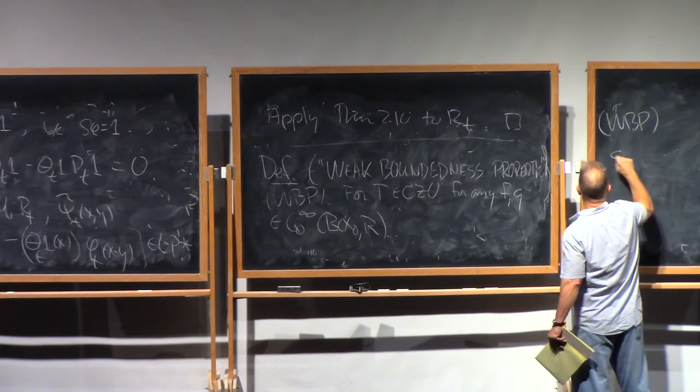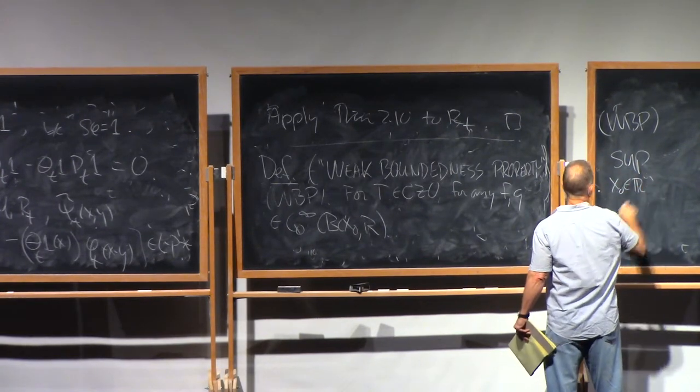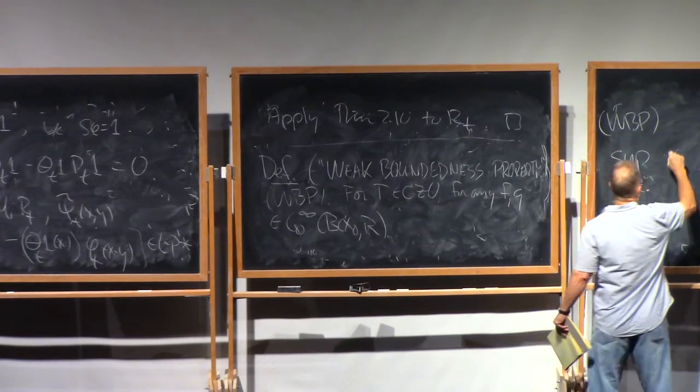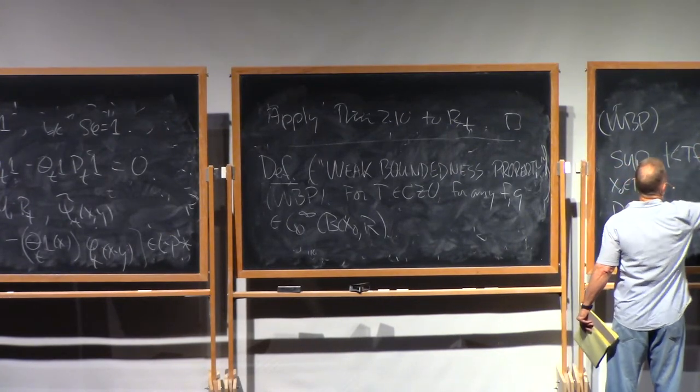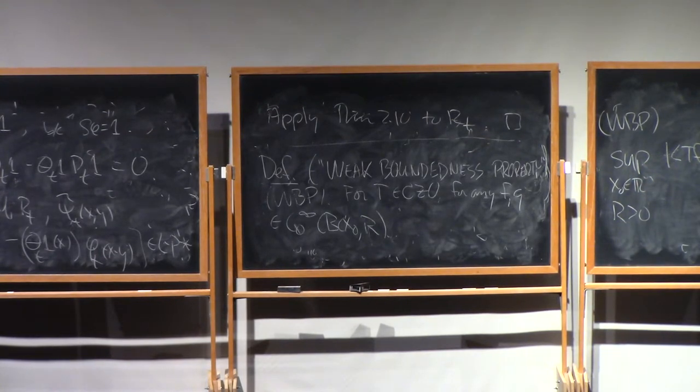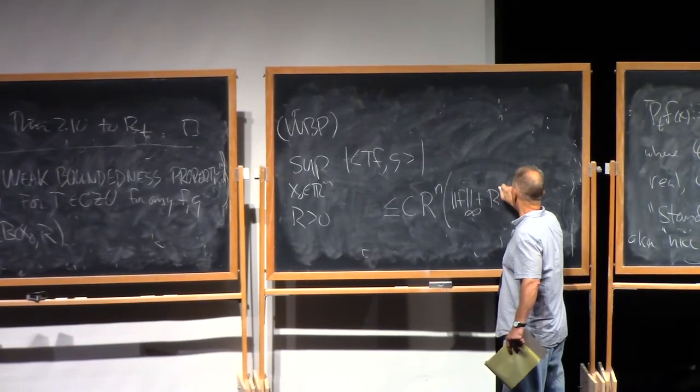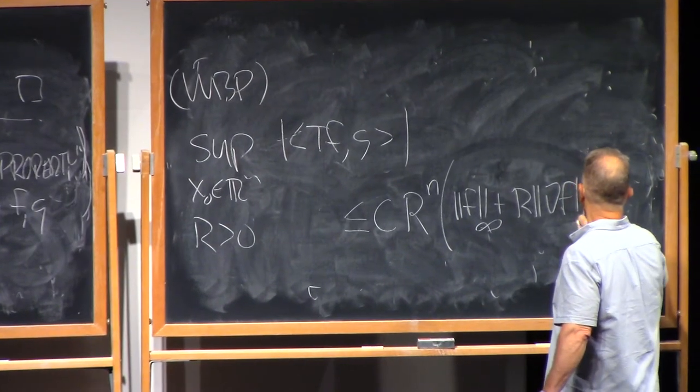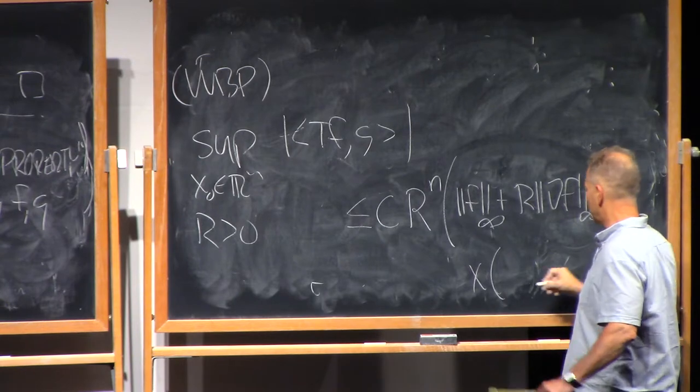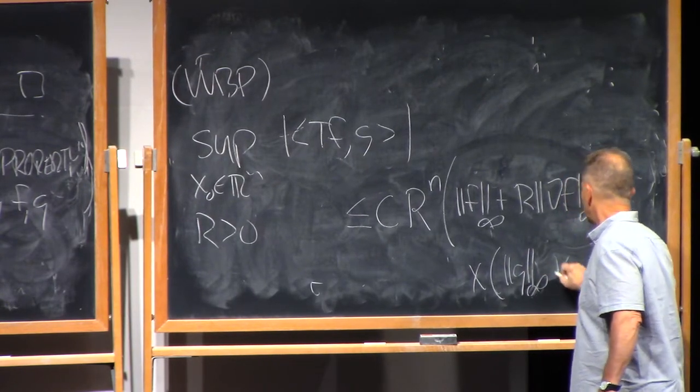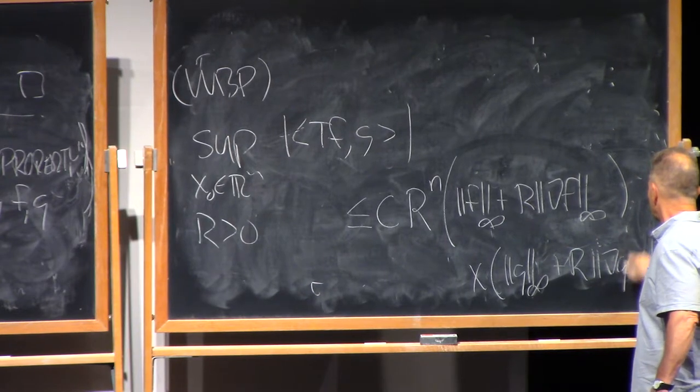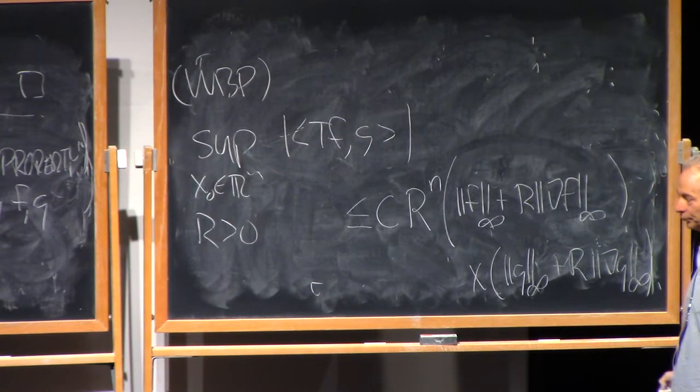The weak boundedness property says that if you look at the sup over X naught in R^N and the sup over radii R bigger than zero, take the pairing of Tf with G, the distributional pairing, take the absolute value of that. This is going to be less than or equal to some uniform constant times this radius R to the n times the following factors. It'll be the L infinity norm of F plus R times the L infinity norm of the gradient of F times the same thing for G. L infinity norm of G plus R times L infinity norm of grad G.